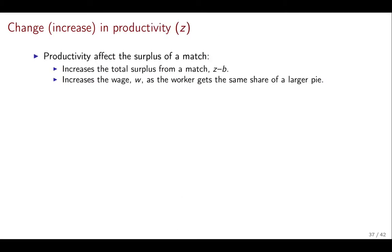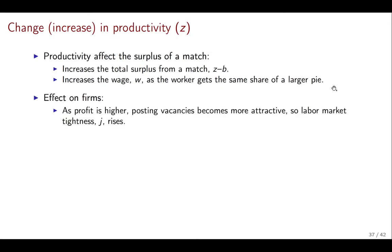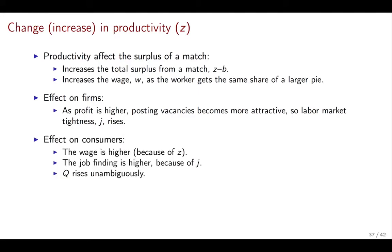The second change we want to cover is an increase in productivity. This is kind of the other side of the surplus of the match. When we increased B we decreased the total surplus; now when we're increasing productivity we're actually increasing total surplus. As before, wages are going to go up but now for a different reason, and so the effect is going to be different. Even though wages are going up, the surplus that firms get — their profits — are going to be higher than they were before. So as the profit is higher, firms want to post more vacancies and tightness is actually going to increase. The effect on workers is going to be that they have higher wages and a higher probability of finding a job because of the higher tightness.